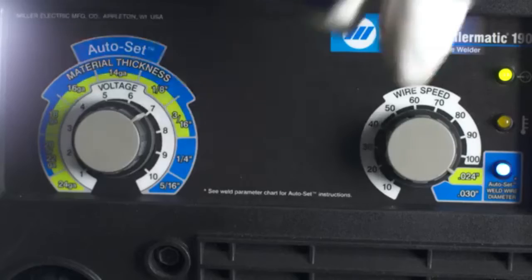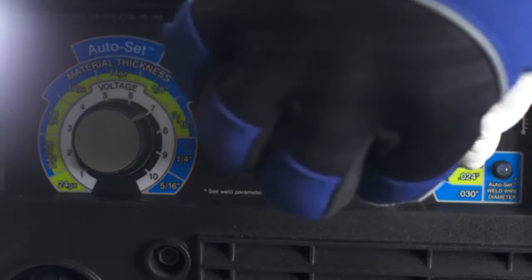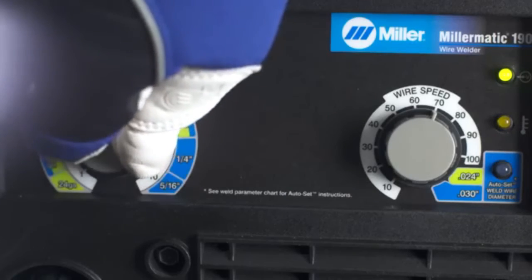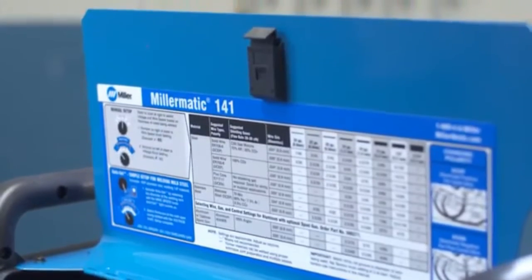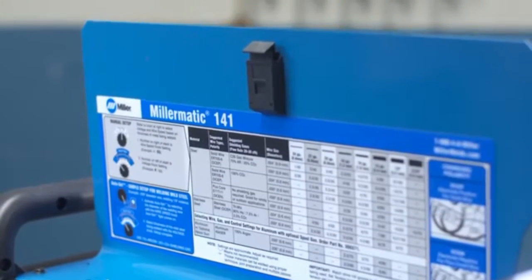For all machines, you can still use manual mode if you want to fine-tune your setting. Select your desired voltage and wire feed speed to dial in your welding parameters using the parameter chart inside the door as a starting point.